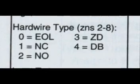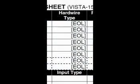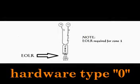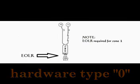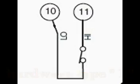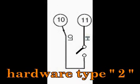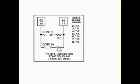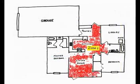Let's take a journey back to our worksheet table. You have five possible entries you can make in this column, zero through four. The default for the first eight zones is end-of-line resistor. Type 0 uses a 2,000-ohm end-of-line resistor to check the health of the circuit. Type 1 is simply a normally closed switch. Type 2 is a normally open switch. Type 3 is called zone doubling, which allows you to identify two separate sensors in a zone and determine which of those two sensors was activated — for example, zone 5 has a front door and a back door, and zone doubling lets you determine which one opened. I'll cover zone doubling in another video.